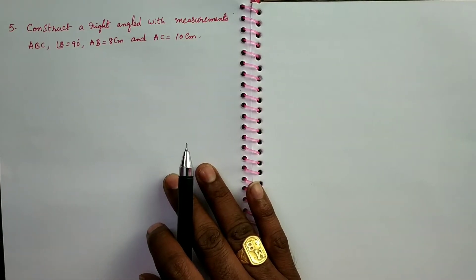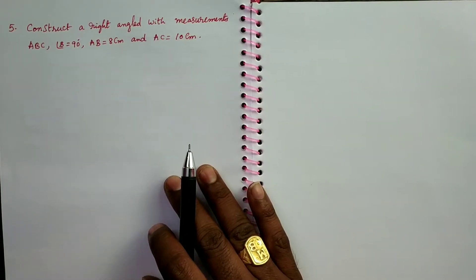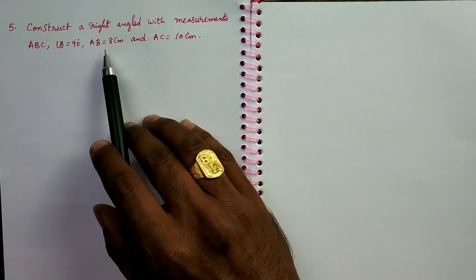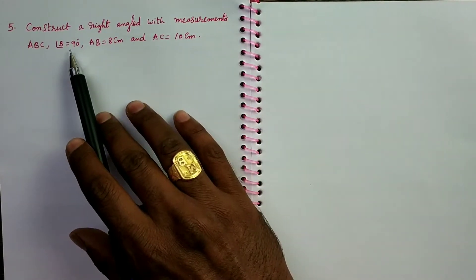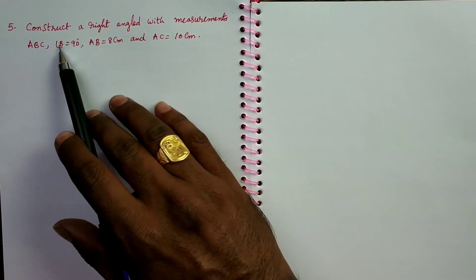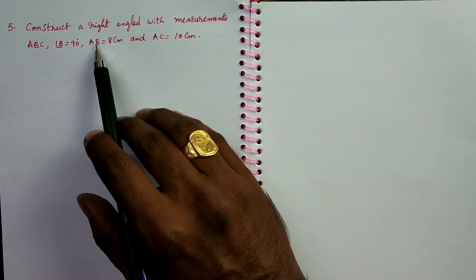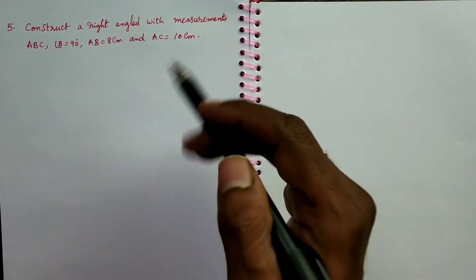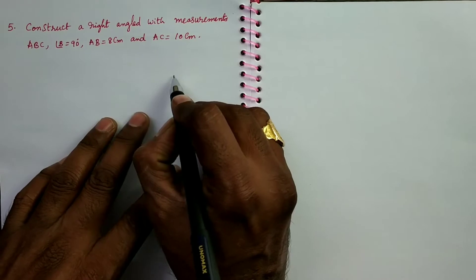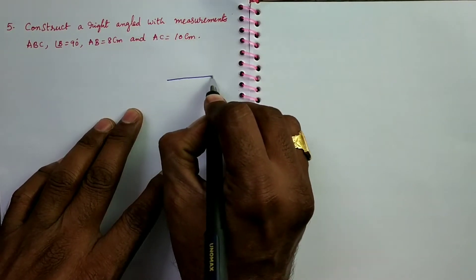First of all, draw a rough diagram of given measurements, triangle ABC. Here AB equals 8 cm, AC equals 10 cm, angle B is 90 degrees. So this angle is based on the given side AB only. Since B is not on AC, we should take AB as base. This is the rough diagram.